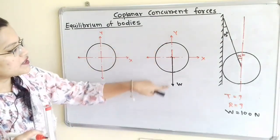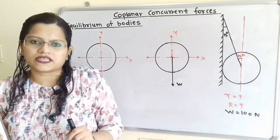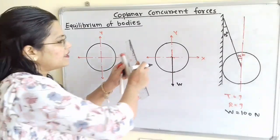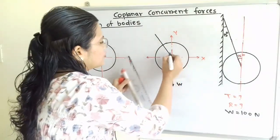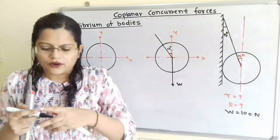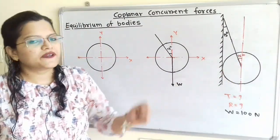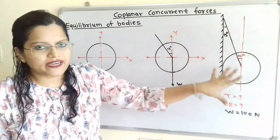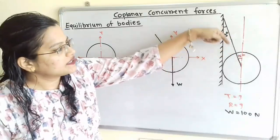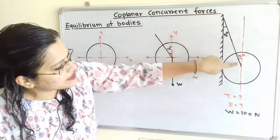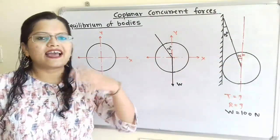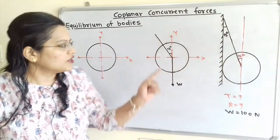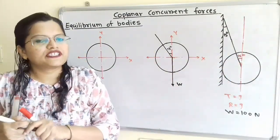In this free body diagram, the Y-axis is the vertical line passing through the center. We will draw a line making an angle of 15 degrees with this Y-axis. Because of the weight W, the sphere tries to pull the string in the downward direction. The string resists this pulling, and the tension T is created in the upward direction along the inclined line. So we show tension T acting upward along this inclined line.